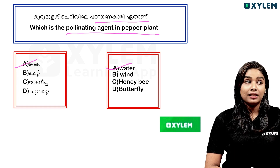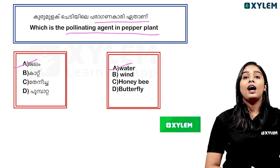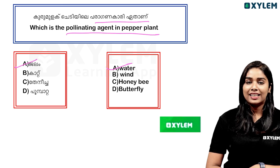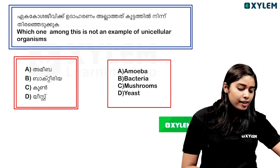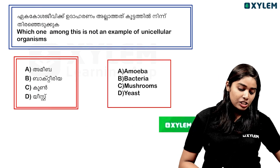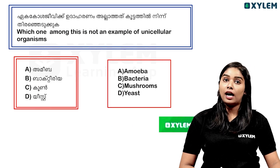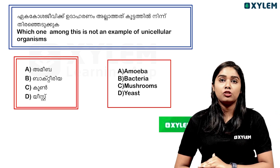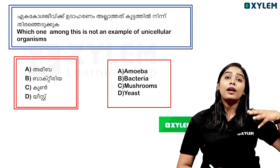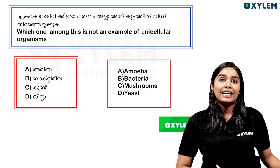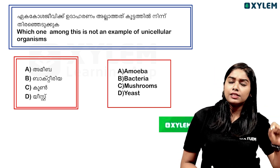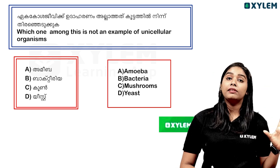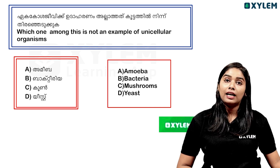Now, which among these is not an example of a unicellular organism? Amoeba, bacterium, and yeast are unicellular organisms. A multicellular organism is not the same thing. The answer is mushroom — mushroom is not a unicellular organism.